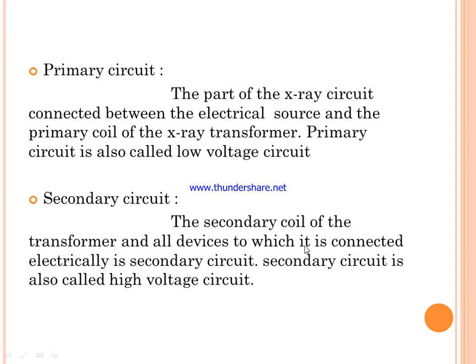The primary circuit is the part of the X-ray circuit connected between the electrical source and the primary coil of the X-ray transformer. It is also called the low voltage circuit. The secondary circuit consists of the secondary coil of the transformer and all devices electrically connected to it.